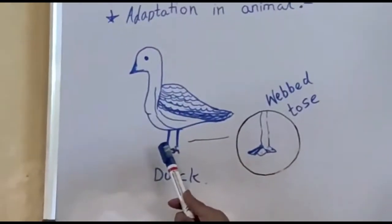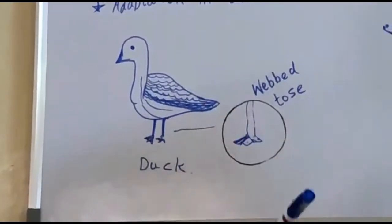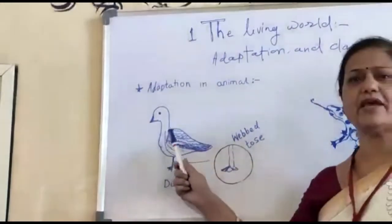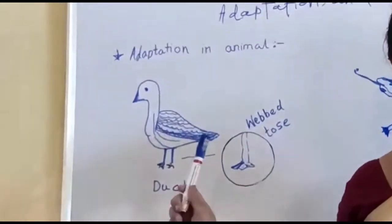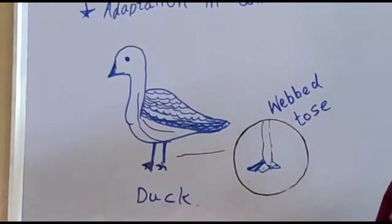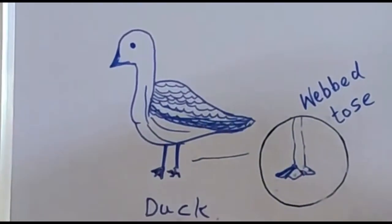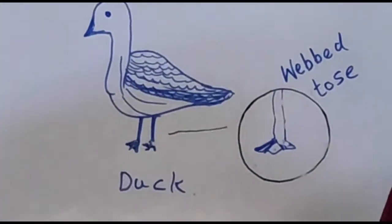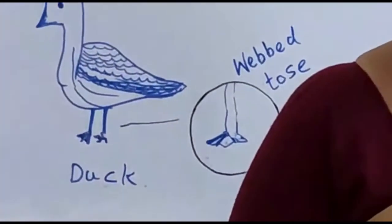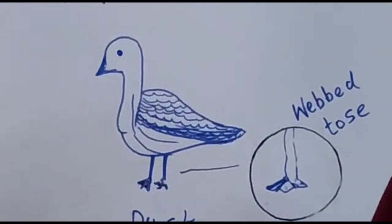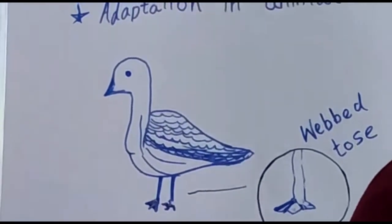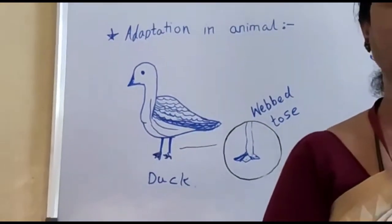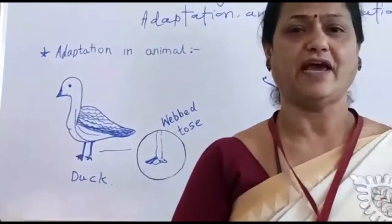Duck is a bird. It cannot take in oxygen dissolved in water — it breathes only with the help of lungs. Duck is not an amphibian, but it is amphibious. Webbed toes, powerful hind legs, slimy, slippery and smooth skin, triangular head, and double mode of breathing — these are adaptations in amphibians.